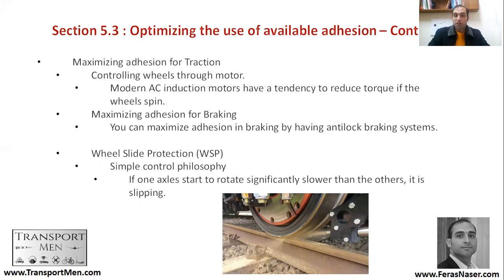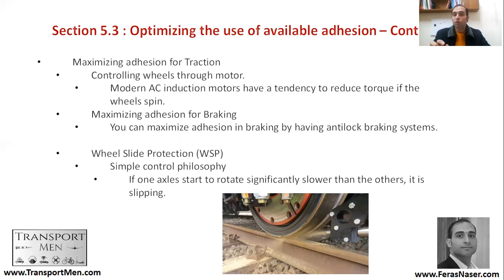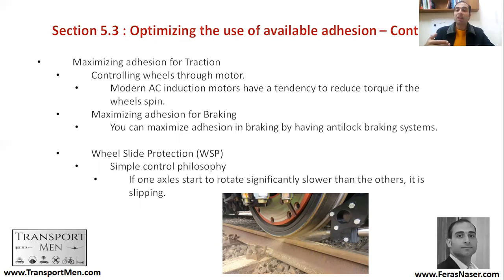To optimize the available adhesion, some motors will reduce the torque if the wheels spin — if they detect that wheel movement is not reducing the distance, the torque is reduced, controlled through the motors. Braking can also be maximized by introducing anti-lock braking systems, which prevent sliding. Another system is wheel slide protection, which operates on a simple philosophy: if one axle starts to rotate significantly slower than the others, this means it is slipping, and the system compares the rotation rates of different axles.